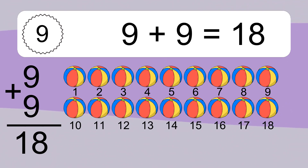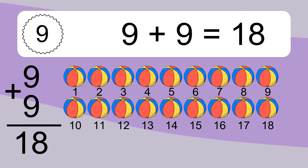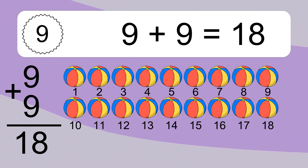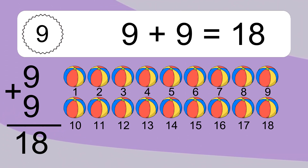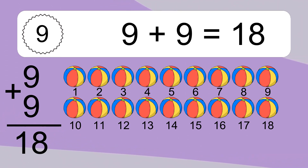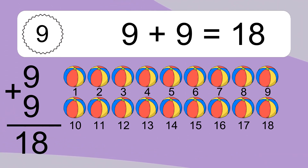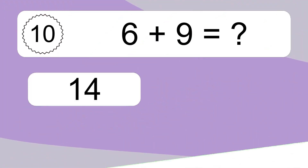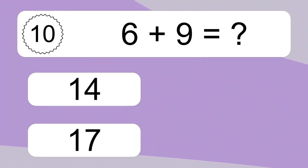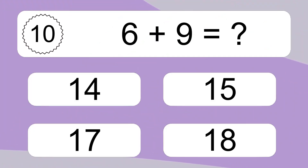9 plus 9 equals 18. Let's count it. 1, 2, 3, 4, 5, 6, 7, 8, 9, 10, 11, 12, 13, 14, 15, 16, 17, 18.